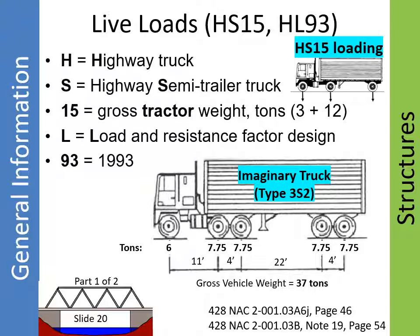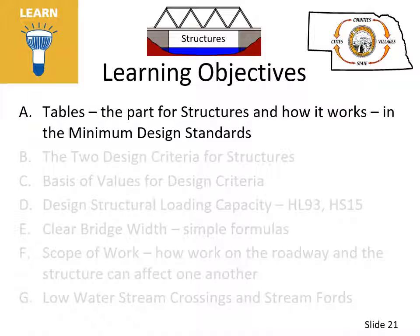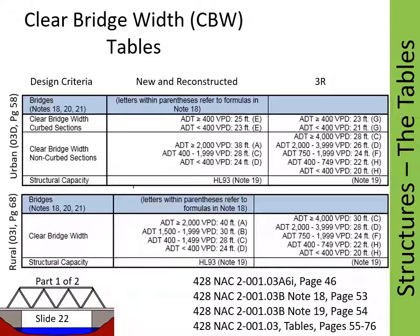Lane loading typically determines member sizes for bridges longer than 90 feet. This segment introduces the minimum design standards tables and how they work for structures; see the tables starting on page 55 and ending on page 86. Two tables are shown—one urban and one rural—showing the design criteria associated with bridges. Notice the references to notes and to formulas A through H found in Note 18 on page 53. The clear bridge width values are minimums and must be increased if formulas A through H result in a larger value. The first 12 standards tables starting on page 55 and ending on page 76 have a similar format; the first four cover urban area standards, the next four cover rural area standards, and the last four cover scenic recreation standards.